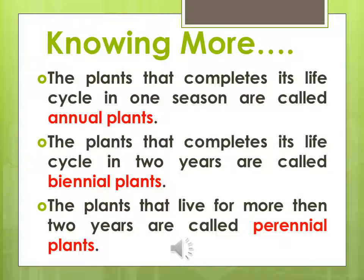The plants that complete their life cycle in two years are called biennial plants — 'bi' means two. In the first year they grow leaves, stem, and roots, and in the next year they give flowers and produce seeds. For example onion, carrot, cabbage, etc.